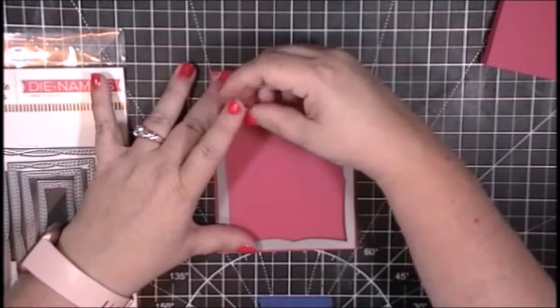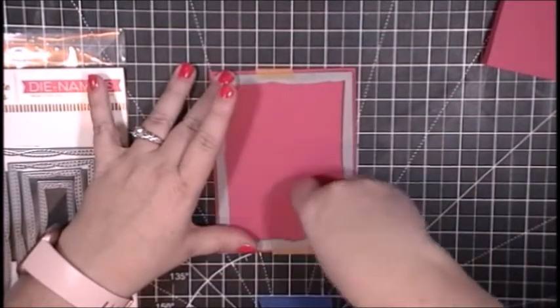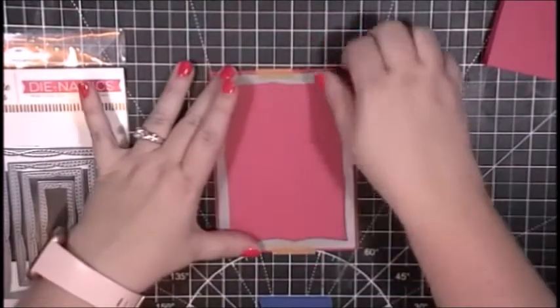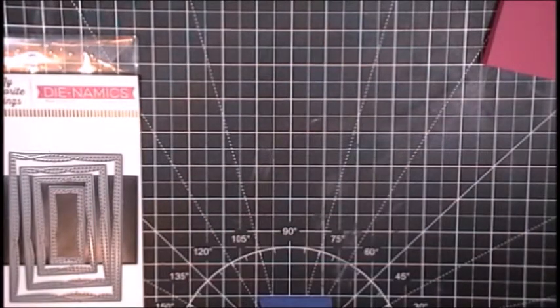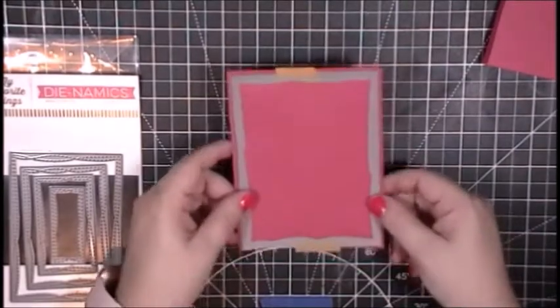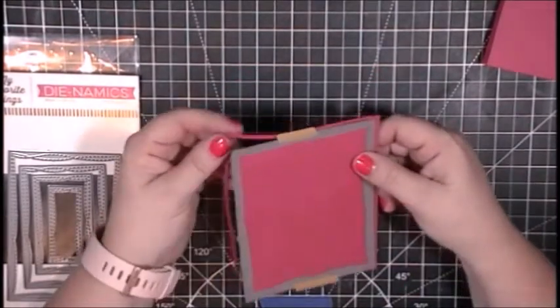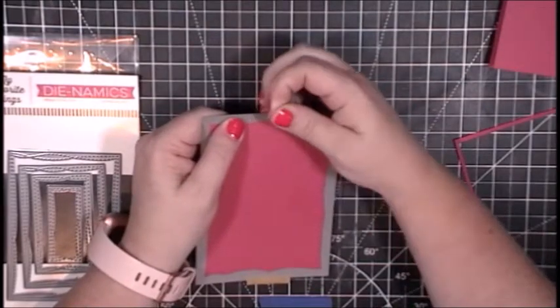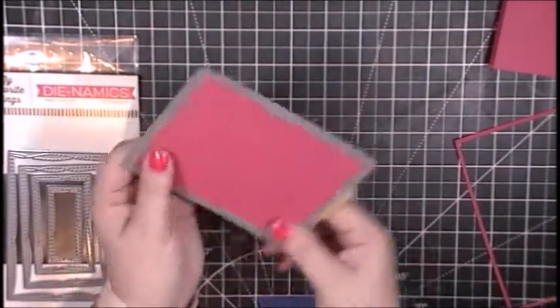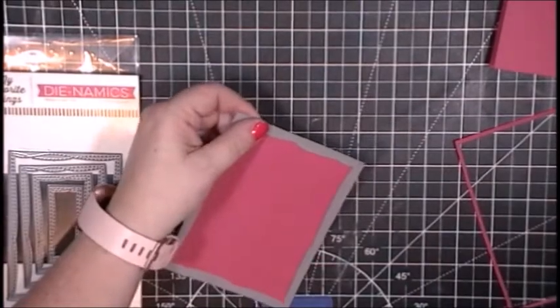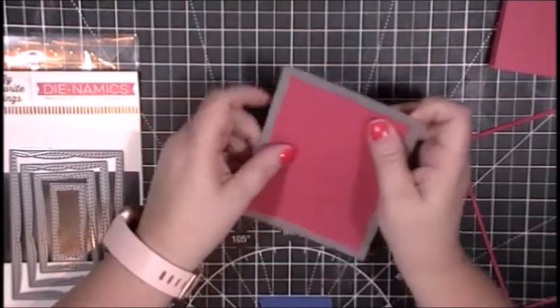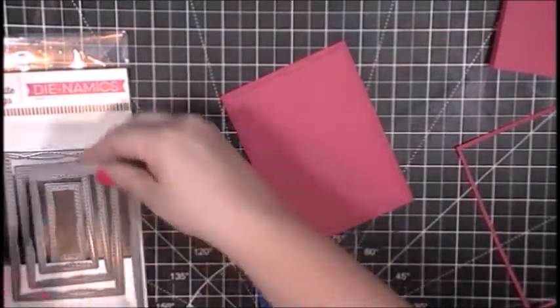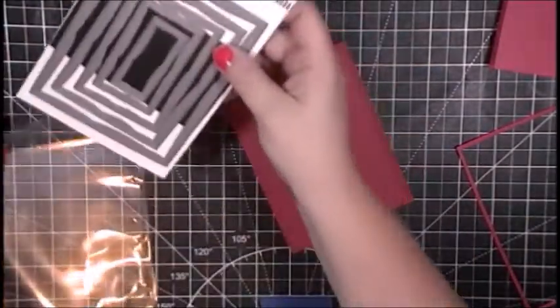I am going to temporarily adhere the die in place with some washi tape that I have put across the back of my hand to take away some of the stickiness, and I will run this through my Spellbinders Platinum die cut machine and carefully remove that washi tape because I do not want to tear the card panel. This is the front of my card. I don't want it to have any jacked up edges or torn pieces on it.